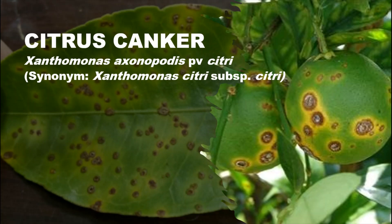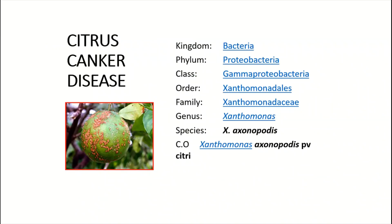The very first bacterial disease we will discuss is citrus canker, one of the most dangerous bacterial diseases. The causal organism is Xanthomonas axonopodis, which belongs to kingdom Bacteria, phylum Proteobacteria, class Gammaproteobacteria, order Xanthomonadales, and family Xanthomonadaceae.